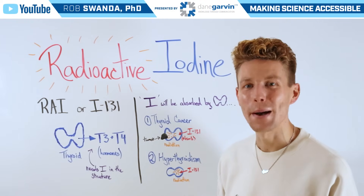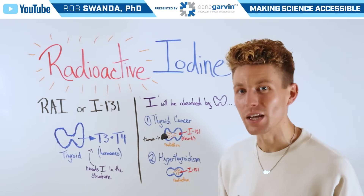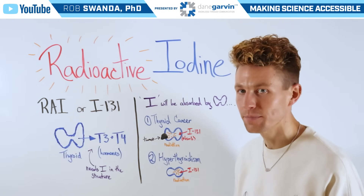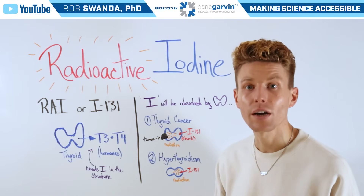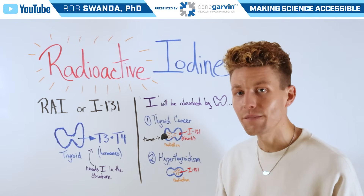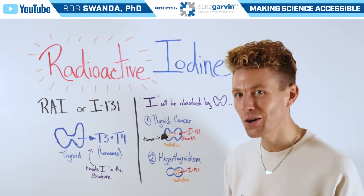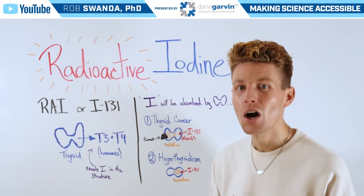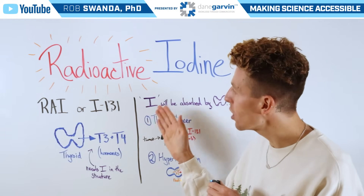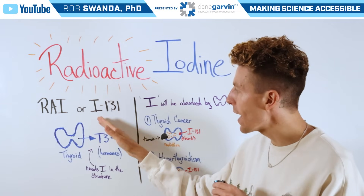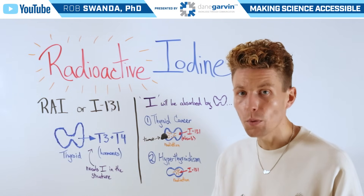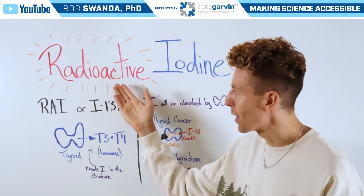We're continuing our education about the thyroid, and for today's video we're going to talk about a specific treatment known as radioactive iodine. Radioactive iodine can also be referred to as RAI or iodine-131, and that's because iodine-131 is the specific isotope or form of iodine that makes it radioactive.